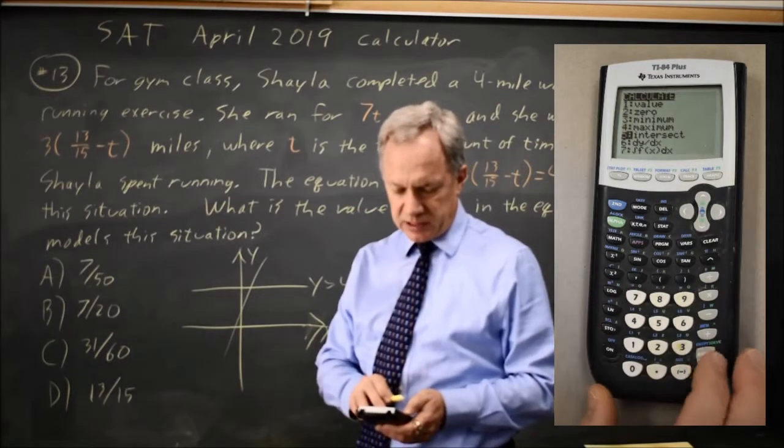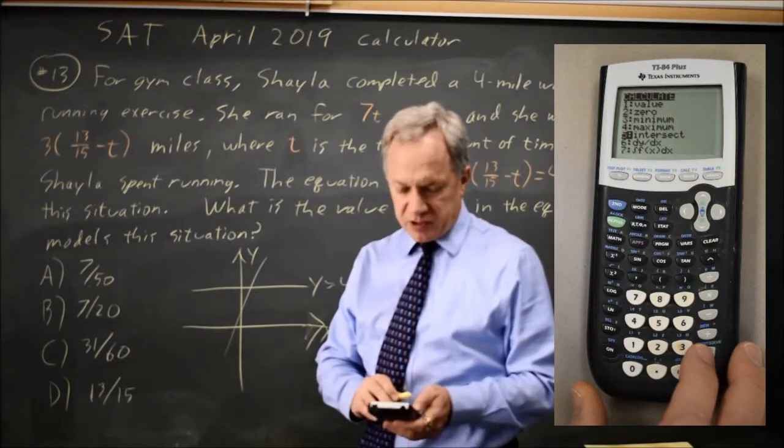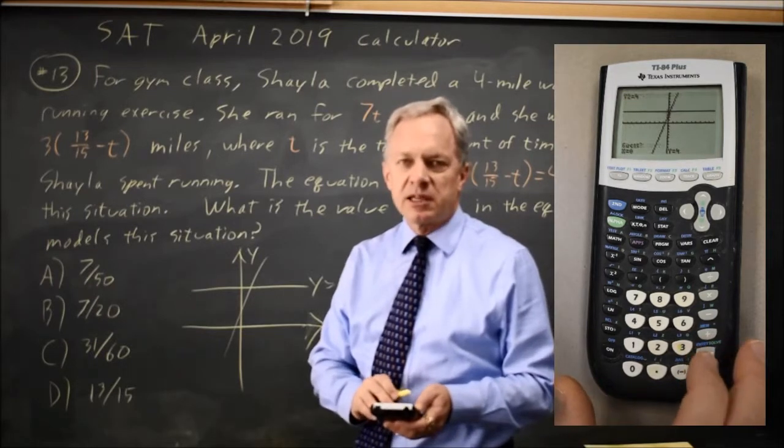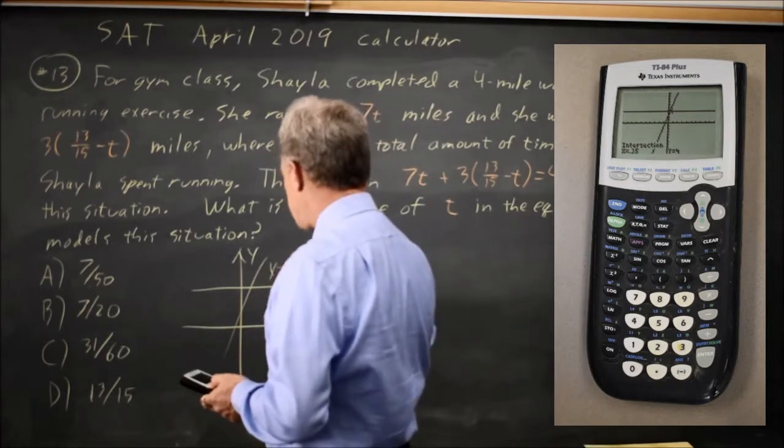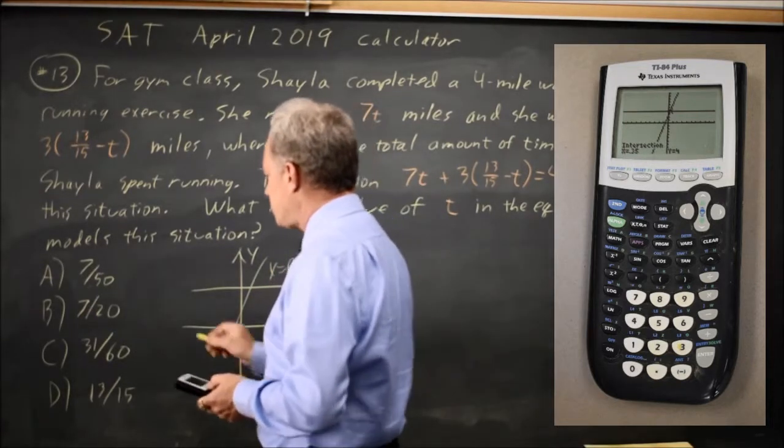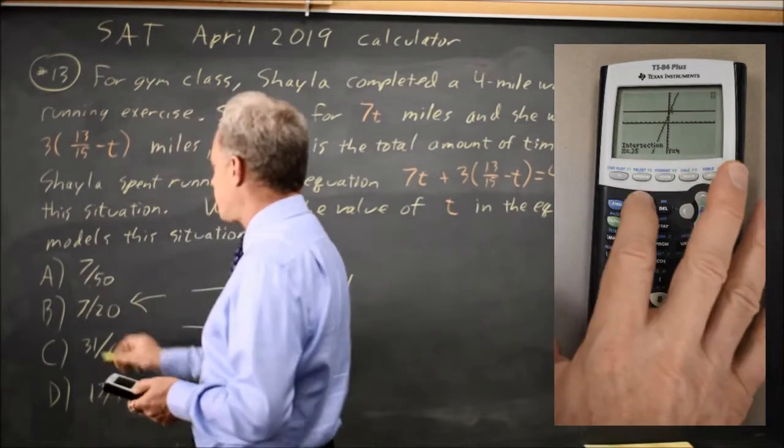second trace, choice 5 is intersect, hit enter three times, you don't have to use your cursor to move next to it, I get x equals 0.35, which is 7 over 20, so the correct answer would be b.